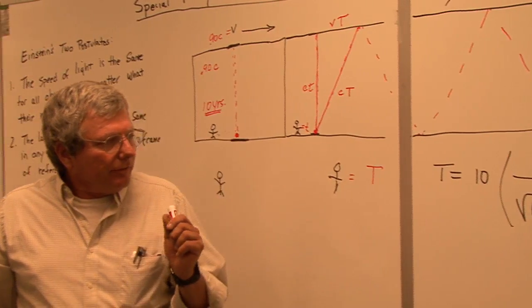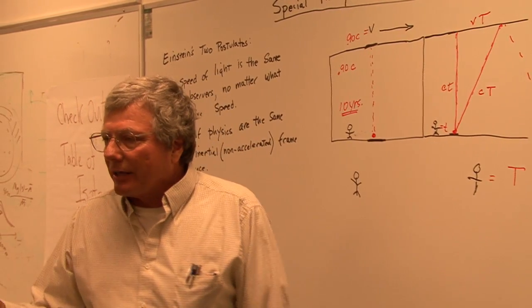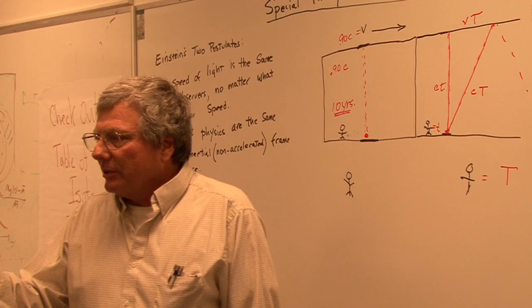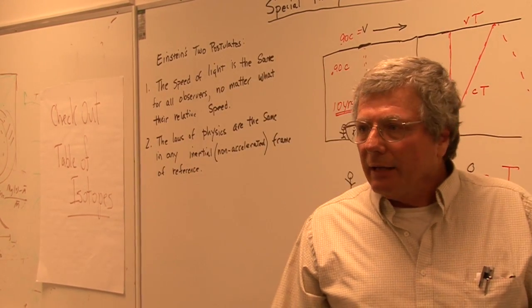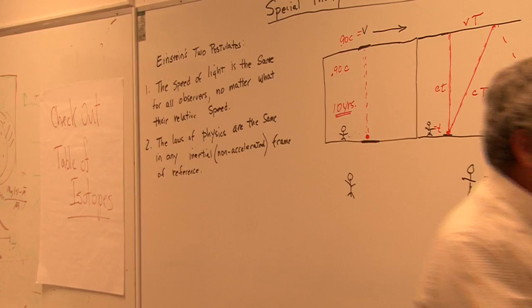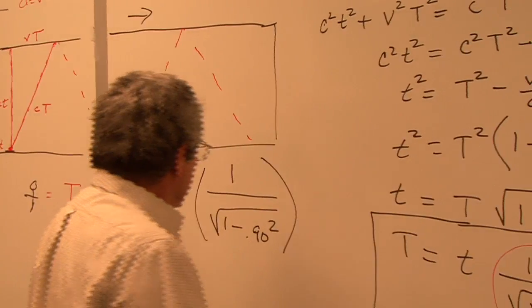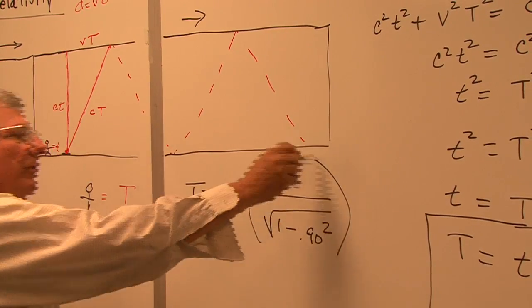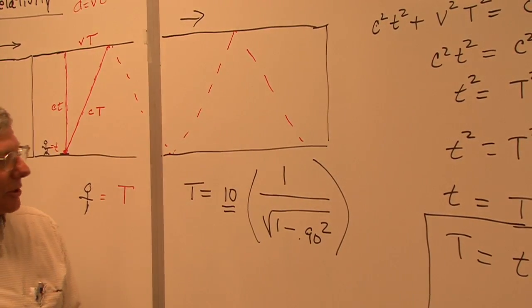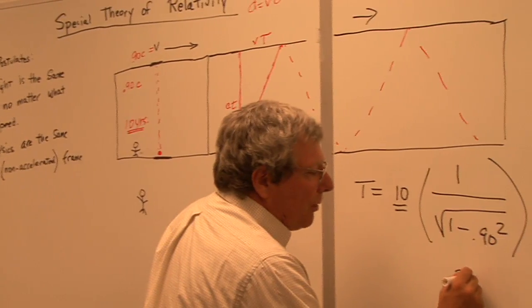If you don't have a calculator, you can use Excel on your computers to compute this. Either way, let's first get the gamma factor and then we'll times it by 10. So can anybody tell me what this 1 over the square root of 1 minus 0.90 is? The gamma factor in this is 2.29.